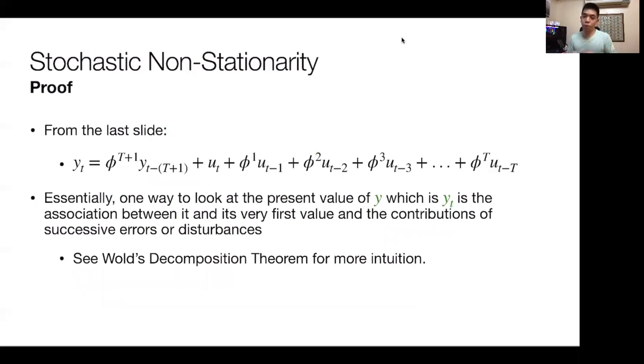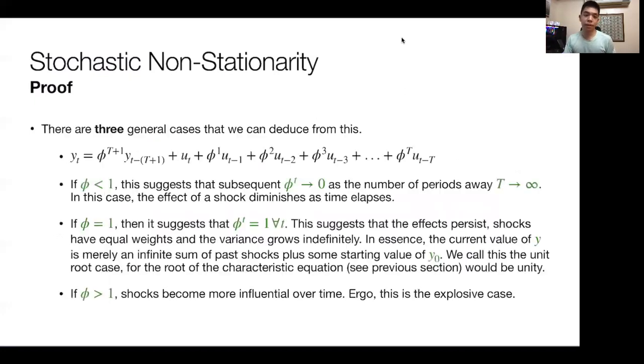If you'd like to see what that means or what that translates to, kindly see my video on Wold's decomposition here. Essentially, one way to look at the present value of y, which is yt, is just the association between that present value and its very first value, plus the sum of the errors that came between those two time periods.